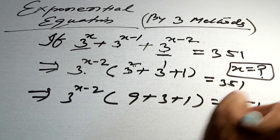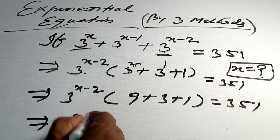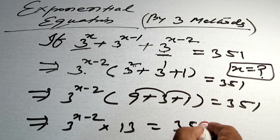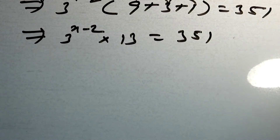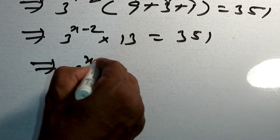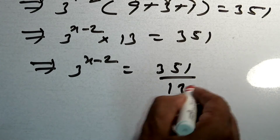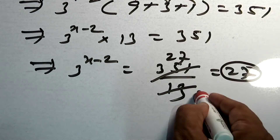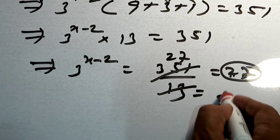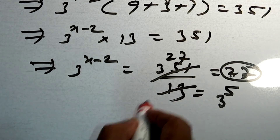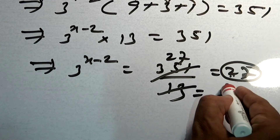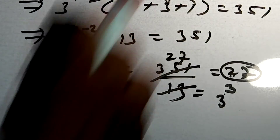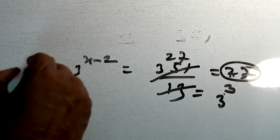Simplifying: 9 plus 3 plus 1 equals 13. So 3 to the power x minus 2 equals 351 divided by 13, which gives 27. And 27 can be written as 3 to the power 3, because 3 multiplied 3 times gives 27.